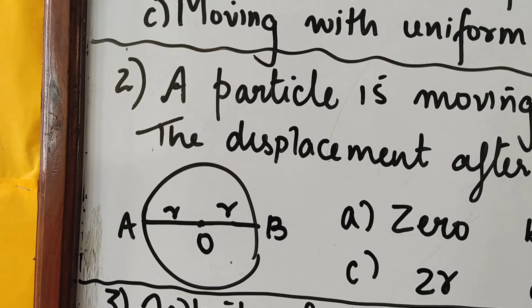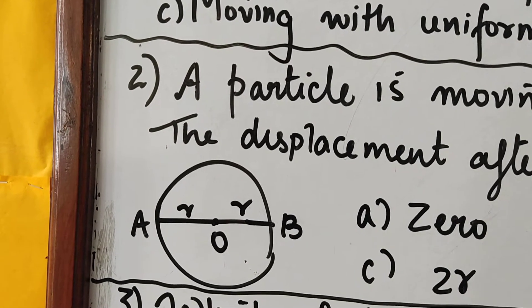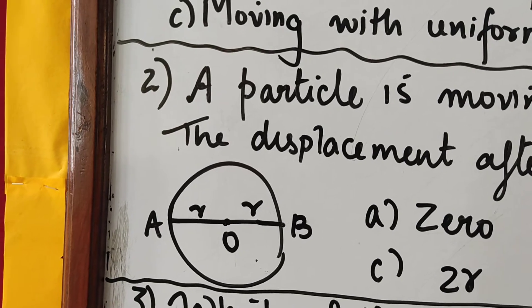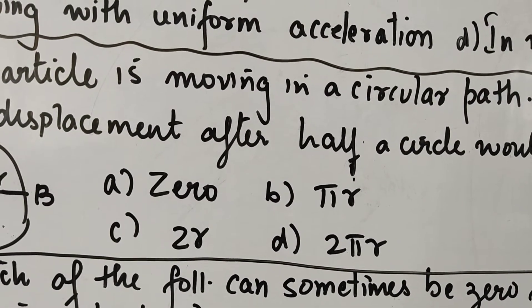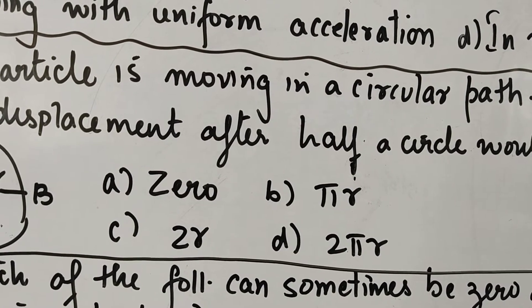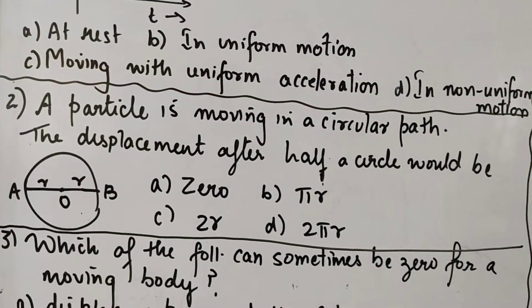it is the shortest distance from initial position to the final position. It means in this case, shortest distance is the diameter AB that is 2r. So from the four options, we will choose 2r, that is C option is correct. I hope you have understood this.